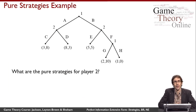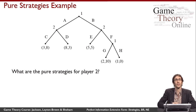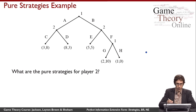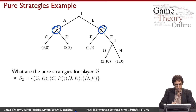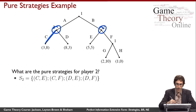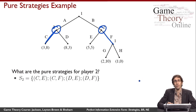Let's do a more complicated example. For player two, who has two choice nodes, the pure strategies are the cross products of the action sets at each of those choice nodes. For example, the pure strategy CF means player two plays C at one choice node and F at the other. Because there are two sets of size two, there are a total of four pure strategies.